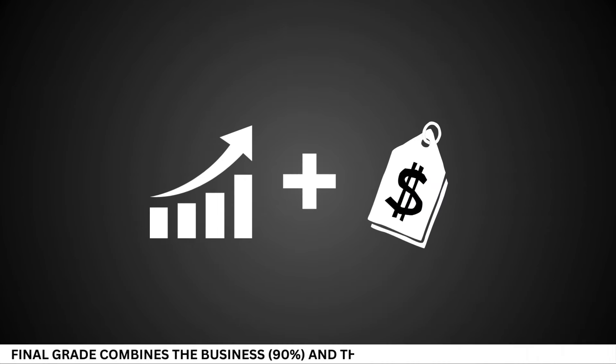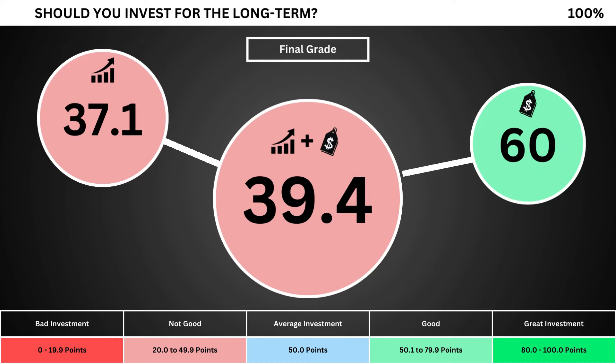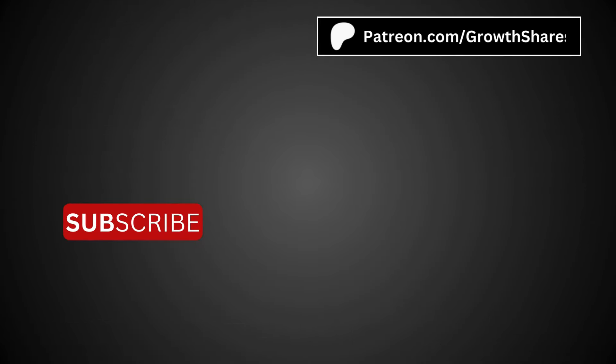Finally, we can put everything together and get the company's final grade. Adding the business grade and the fair price grade, we can see the company's final grade. Anything less than 50 means it's not a good long-term investment. A final grade above 50 means it would make a good long-term investment if you bought the stock right now. So what are your thoughts? Are you going to invest? If you do, invest wisely. And as always, take care of your money.